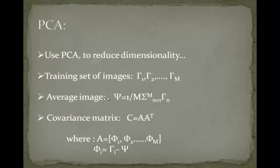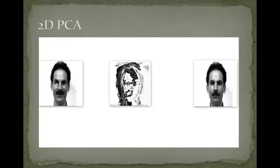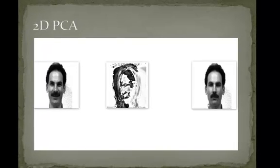These are stored in cache files. When an image is given as input, the Euclidean distance between the input image and the images in the database is calculated, and the image with the minimum Euclidean distance is retrieved.